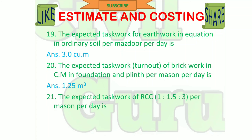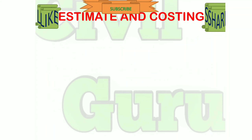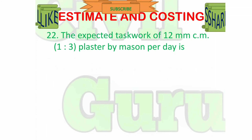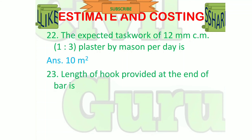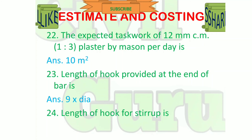The expected task work of RCC 1:1.5:3 per mazdoor per day is 3 square meters. The expected task work of 12 mm cement mortar 1:3 plastering per mazdoor per day is 10 square meters. Length of hook provided at the end of a bar is 9 times the diameter. Length of hook for stirrup is 12 times the diameter.